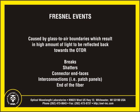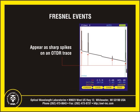Fresnel events are caused by glass-to-air boundaries in the optical fiber, which cause a high amount of light to be directly reflected back towards the OTDR. Common Fresnel events include breaks, shatters, connector end faces, interconnections such as patch panels, or even the end of the optical fiber. Fresnel events appear as sharp spikes on an OTDR trace.